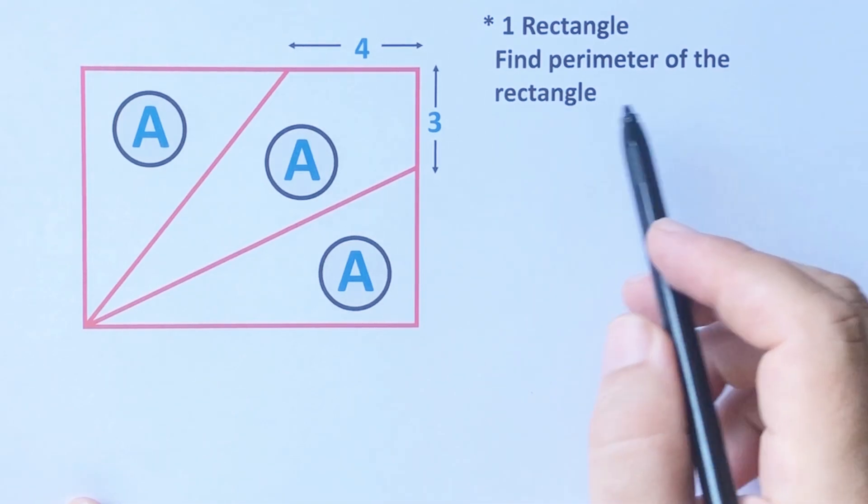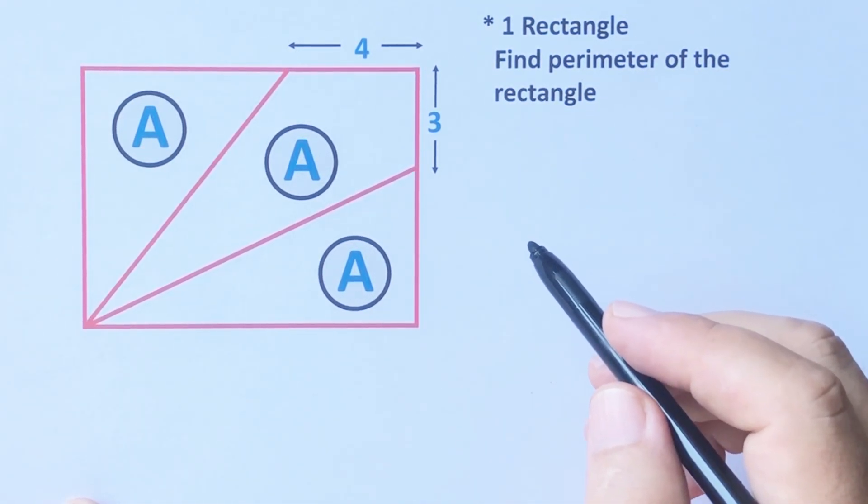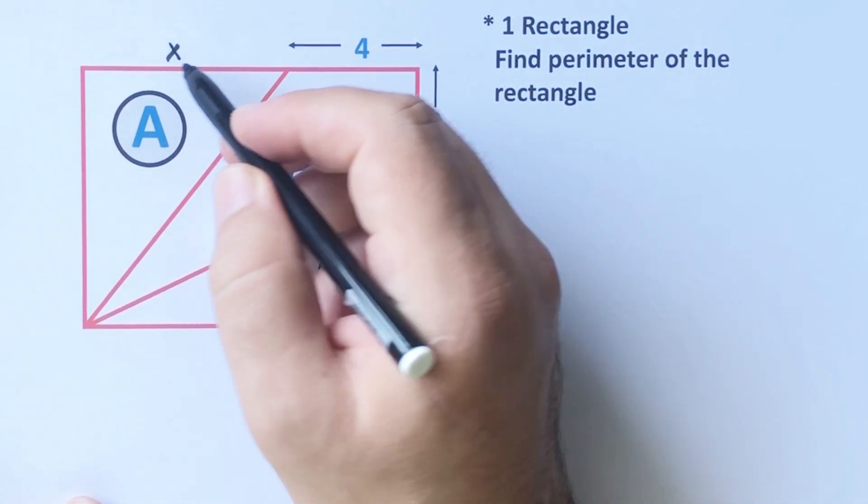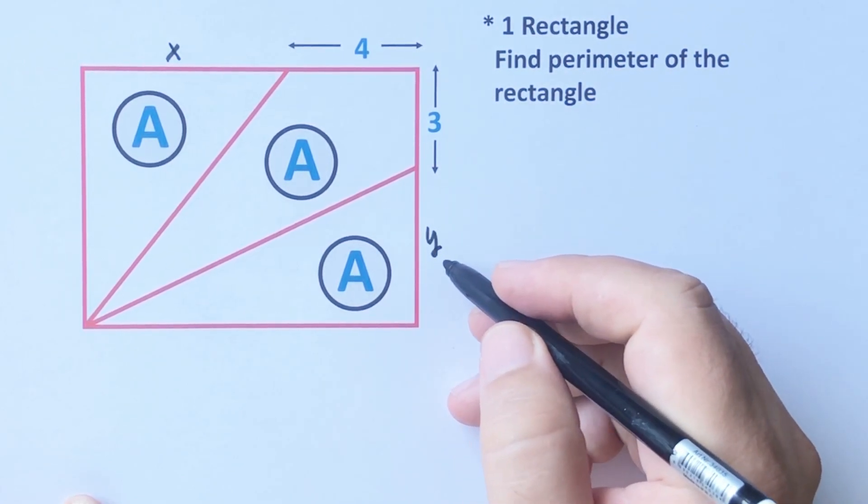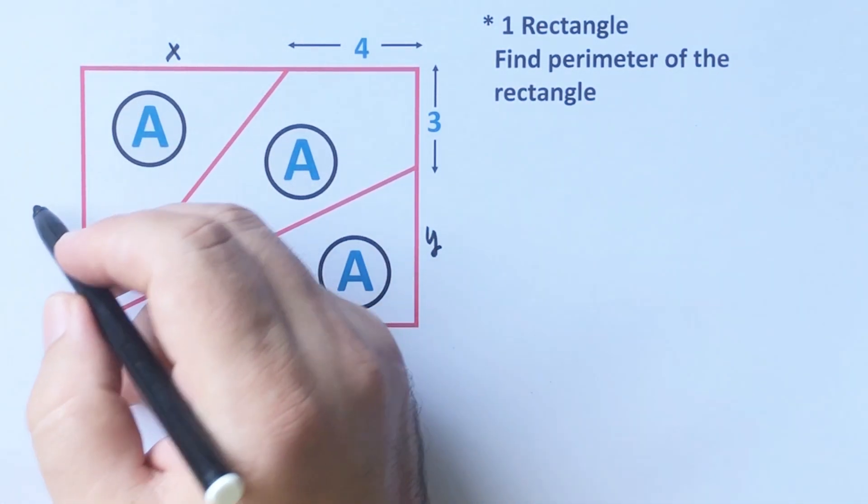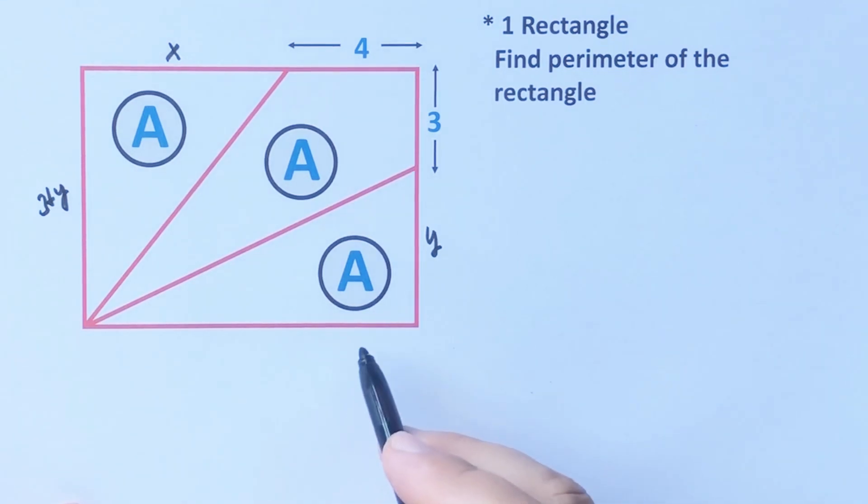The perimeter of the rectangle is x. First, let's call here x and this length I'm going to call here y units. So this side is three plus y, and this side is x plus four units.